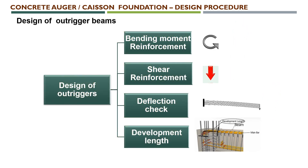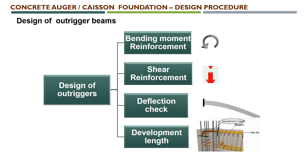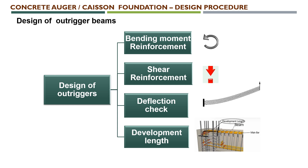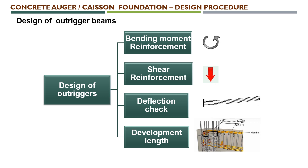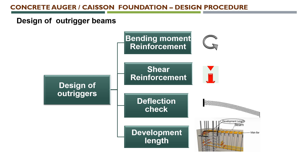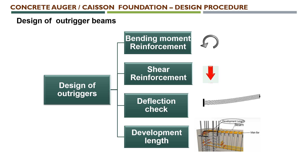Coming to the design of outrigger beams or outrigger frames: the outrigger beams are a cantilever projection from the well, used to hold the transmission line tower above it. We need to check bending moment and fix the reinforcement requirement for bending. Second, shear reinforcement is designed according to the shear force acting on the outrigger beams. Third is a deflection check — we verify that deflection is limited to the standard and technical specification requirements. Finally, development length is calculated to determine how long the anchoring of reinforcement must be at the connection part.